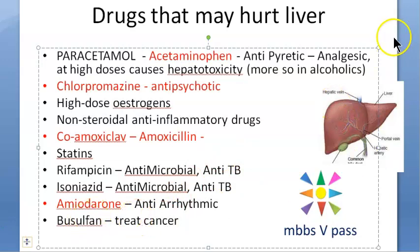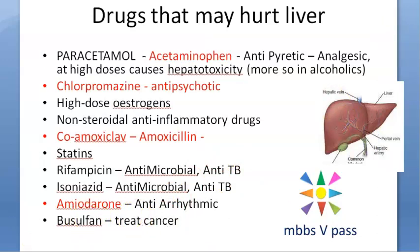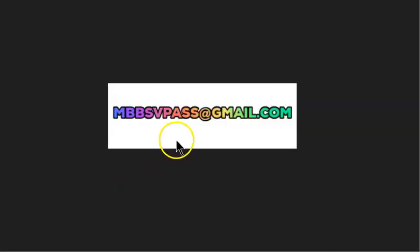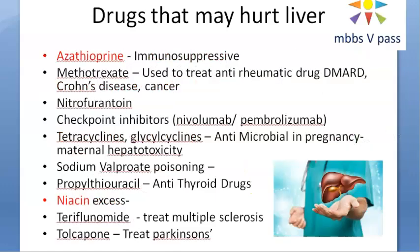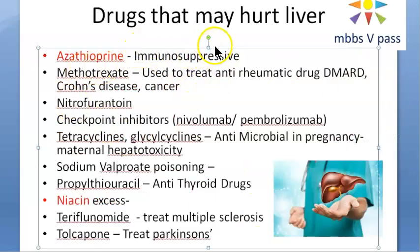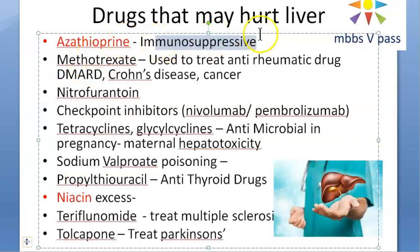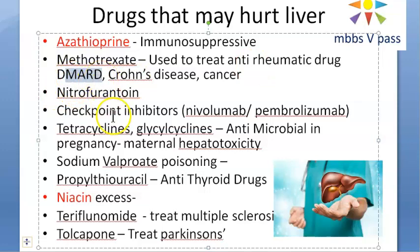Moving to the second set of hepatotoxic drugs: azathioprine is an immunosuppressive agent — you might hear about it even in myasthenia gravis. That can hurt the liver. Methotrexate is very important to know — it is a disease-modifying anti-rheumatic drug, a DMARD. It is also used to treat Crohn's disease and cancer. This one can cause non-alcoholic liver disease.